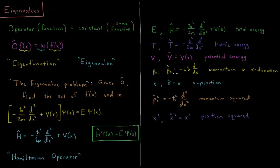These are the very common operators you'll see all the time in quantum mechanics. Every property which you can measure in classical mechanics has a quantum operator associated with it. The most important operator is the Hamiltonian operator, which is a sum of the kinetic energy and potential energy operators, giving us the Schrödinger equation — which is an eigenvalue equation: H-psi equals E-psi.